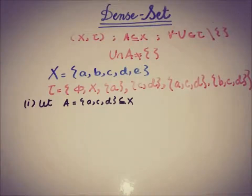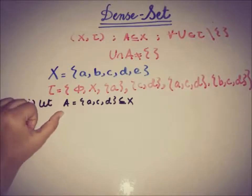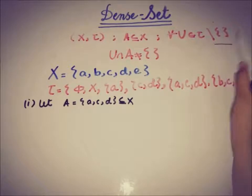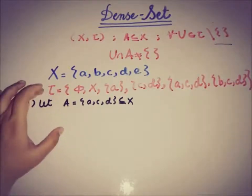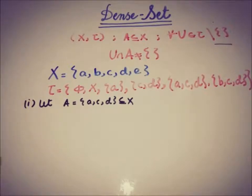Taking the intersection of A with all of the elements of τ except empty set. If the intersection of A with all of the elements except empty set is non-empty, then A should be a dense set of X.